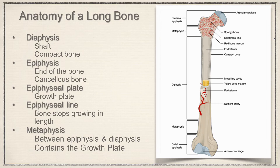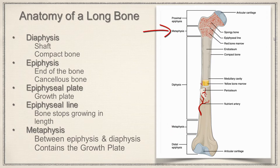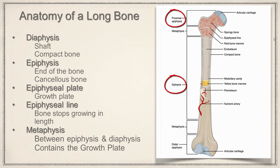Then we have the metaphysis. Meta means middle, and if you notice, we have one up here and one down here. The metaphysis is in the middle of the epiphysis and the diaphysis. Epi means above, so epiphysis; diaphysis is the shaft — right in the middle of those two we have the metaphysis. That's going to contain the growth plate and eventually the growth line after ossification.